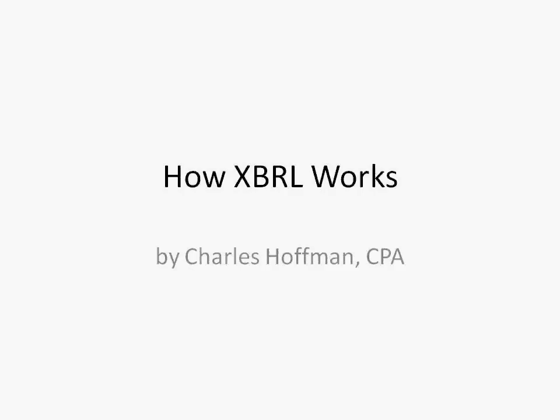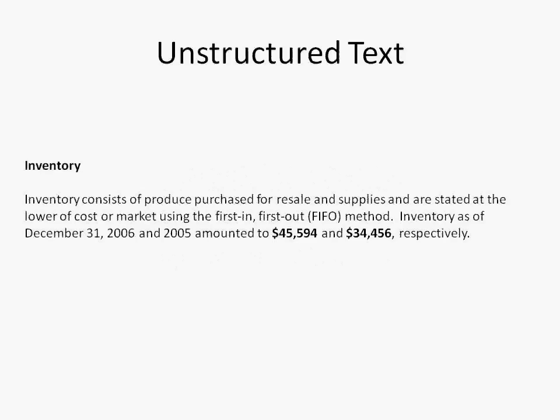Consider the following simple financial statement disclosure for inventory. We have a paragraph of text, and in that paragraph we have multiple pieces of information, such as the valuation method for the inventory, what the inventory consists of, and the values of inventory for 2006 and 2005. What we have here is a chunk of unstructured text. A computer has a hard time with this because it's very difficult for a computer to go into this paragraph of information and find the discrete pieces of information within a large chunk, particularly if it's done inconsistently.